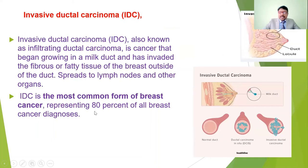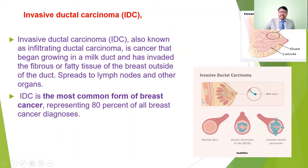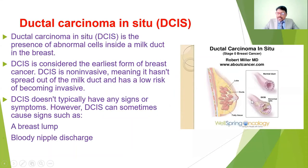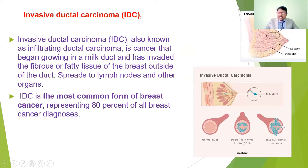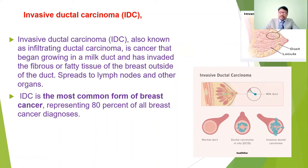Invasive ductal carcinoma develops in the ducts but spreads to other parts of the body — to the lymph nodes and other organs. Unlike DCIS, which stays confined to the ducts, invasive ductal carcinoma spreads to surrounding breast tissue, the lymphatic system, and other organs. It is the most common type of breast cancer, representing 80 percent of breast cancer diagnoses.